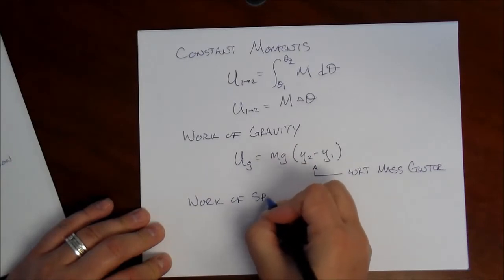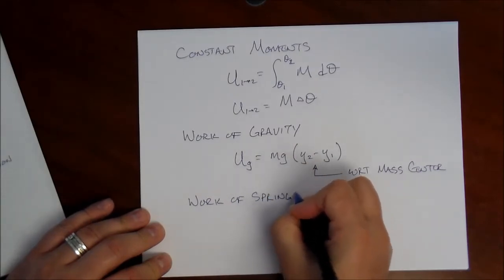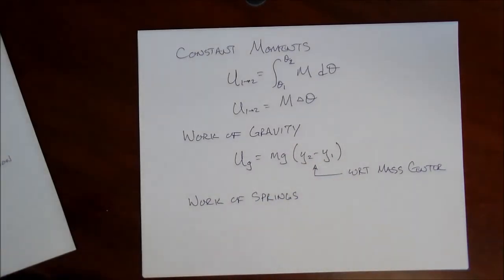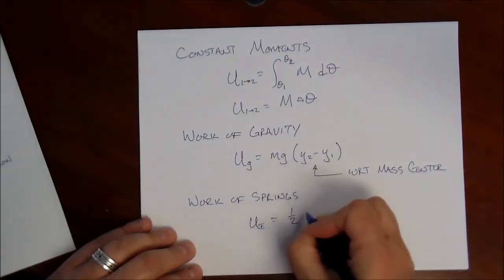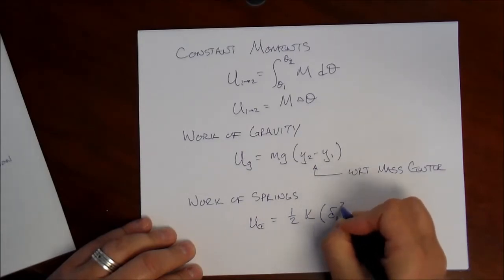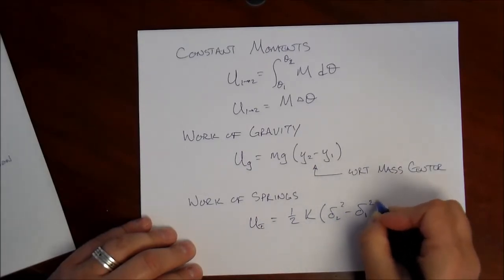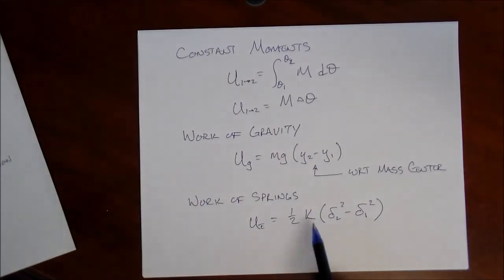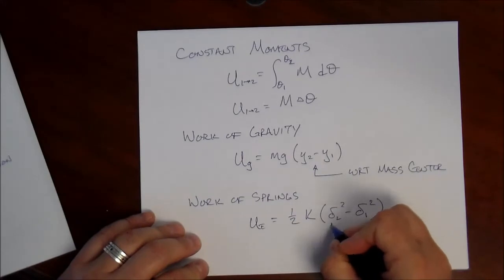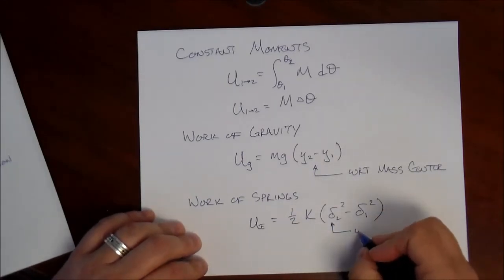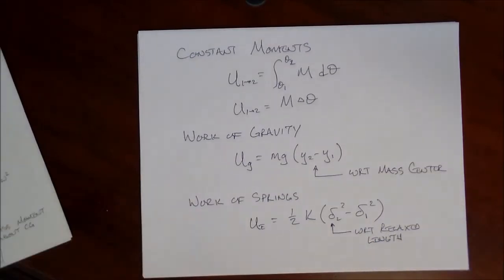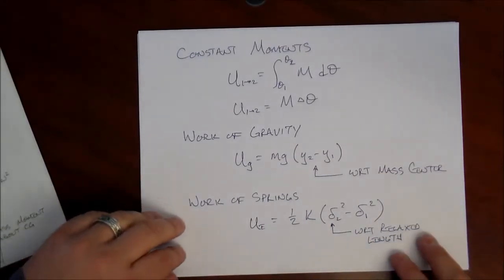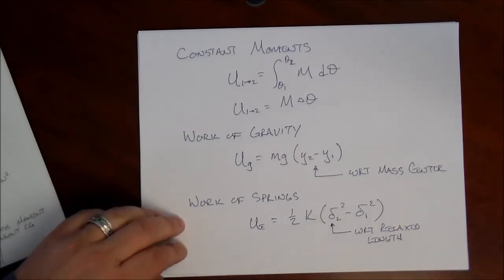We'll see some springs doing work, elastic springs. There's no change in the expression for this work and no change in consideration. It's just one-half times the stiffness constant times delta squared minus delta squared. Remember, delta is the length of the spring with respect to the relaxed position. So that's all we need to be concerned with in terms of work.